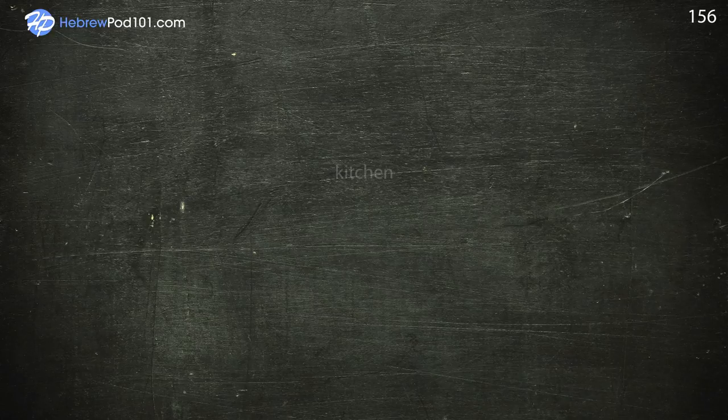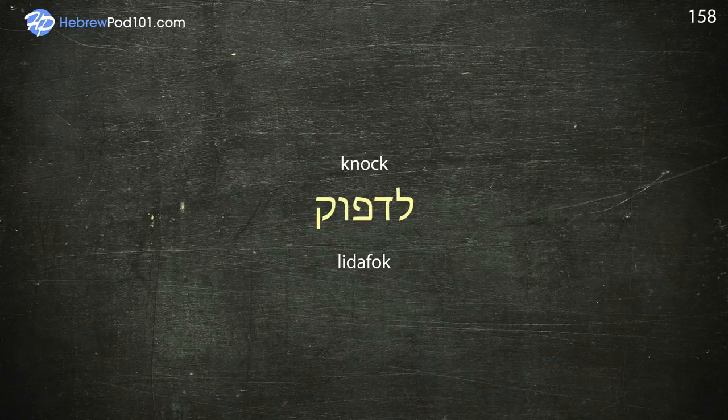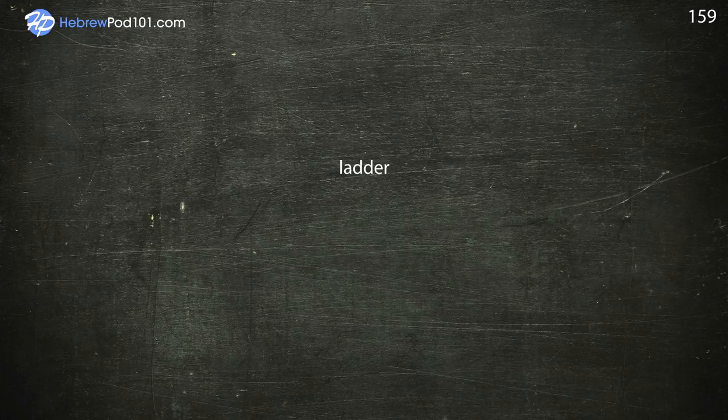Kitchen — Mipach. Knife — Sakin. Knock — Litre. Ladder — Sulem. Ladle — Matzeket.